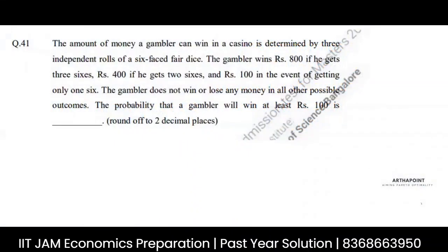This is Question number 41 of IIT Jam Economics 2021 paper. Let's see what the question is saying. The amount of money a gambler can win in a casino is determined by three independent rolls of a six-faced fair dice.